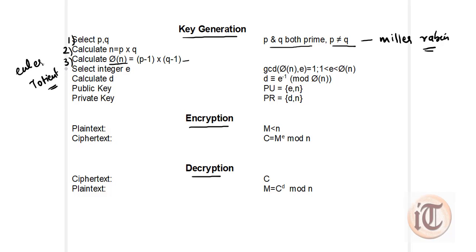After calculating phi of n, the next step is to select integer E, which is your public key. We select E such that it is not a factor of phi of n — in other words, GCD of E and phi of n equals 1. E must be between 1 and phi of n. This integer E is the public key known to the sender.